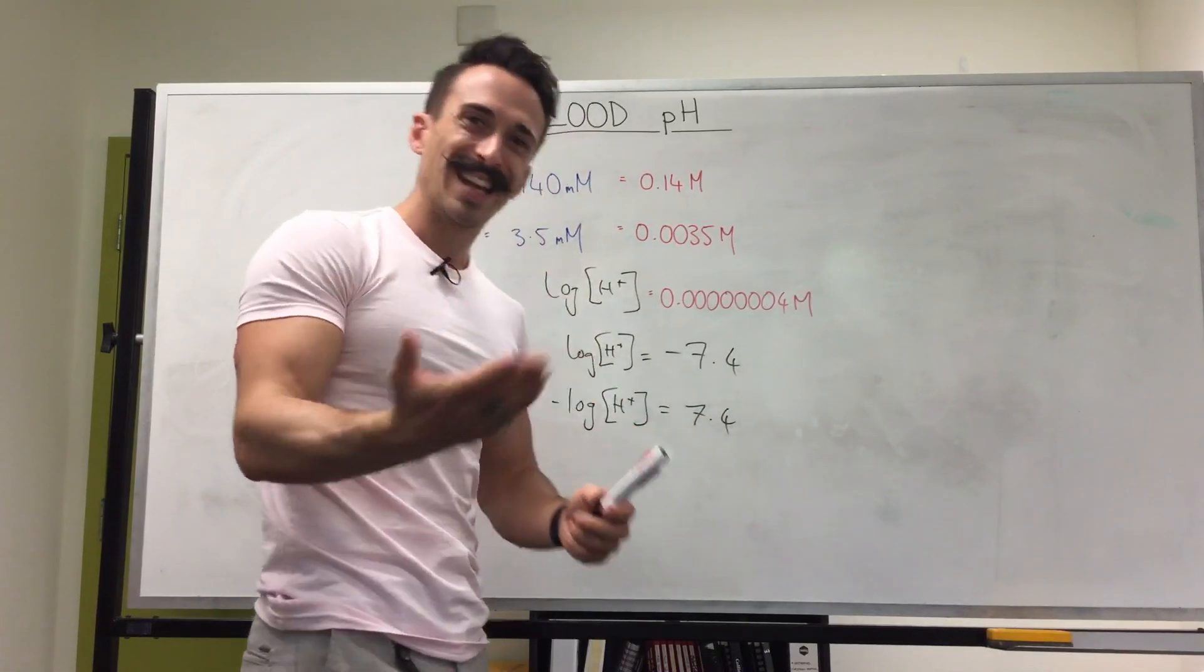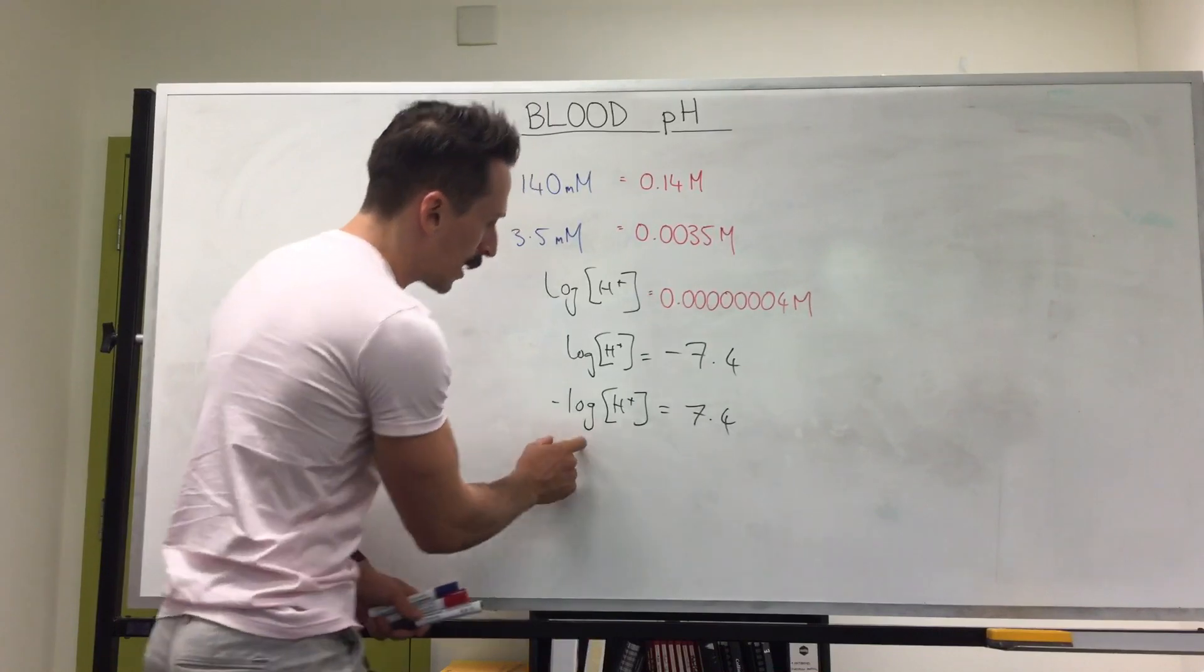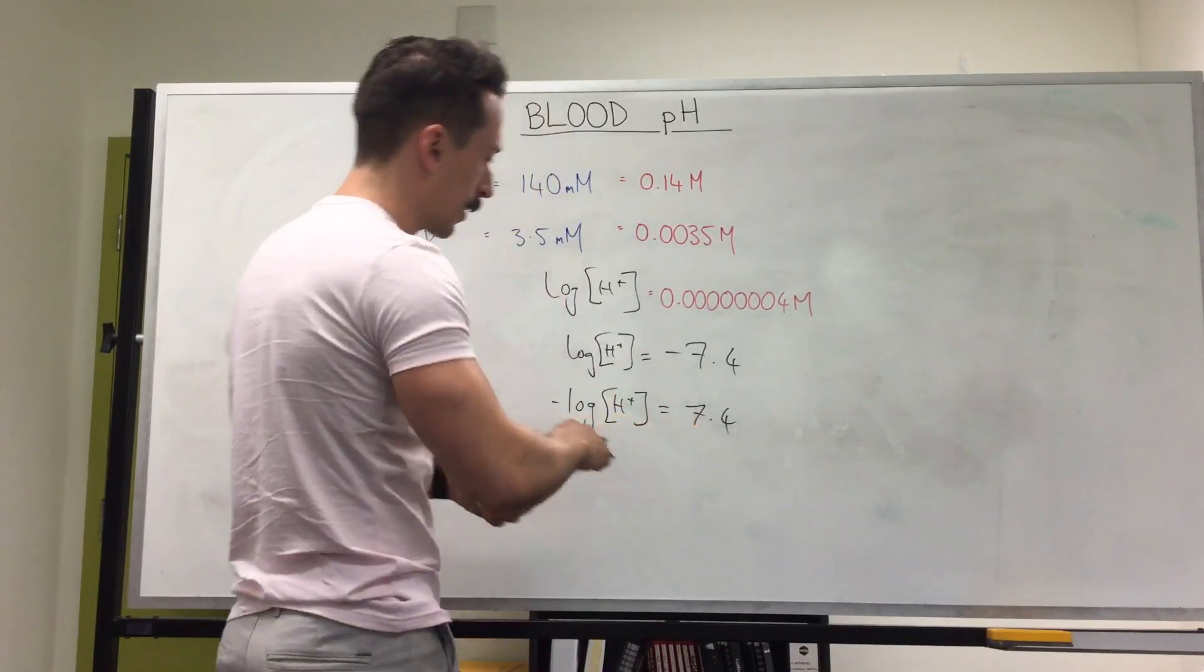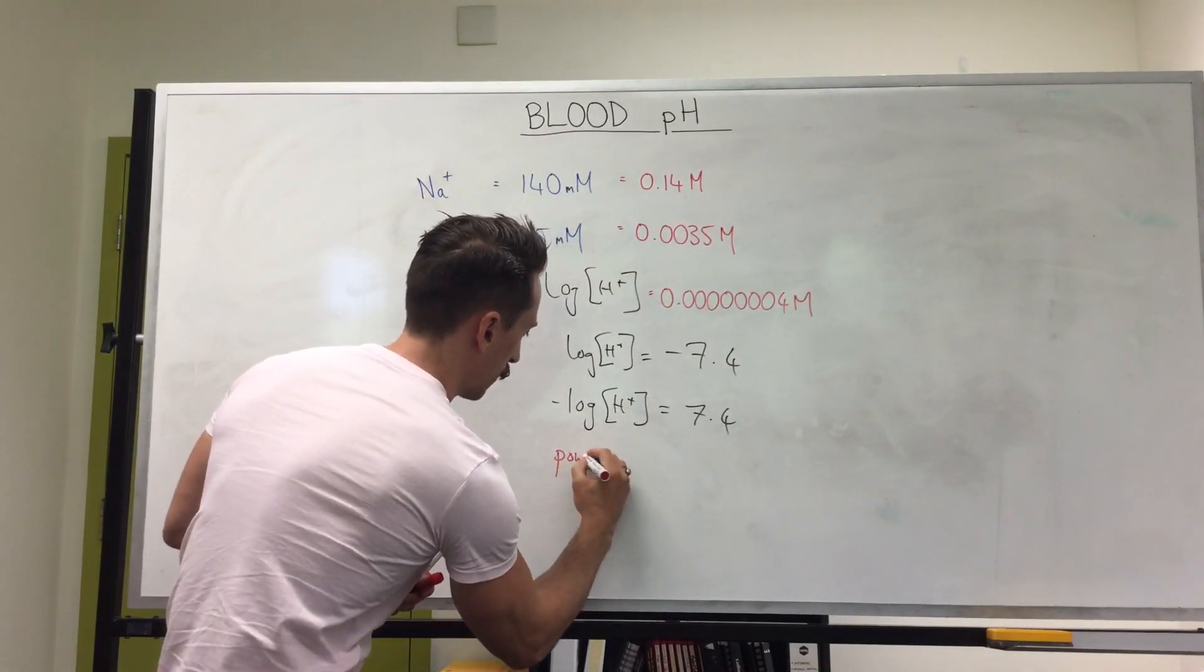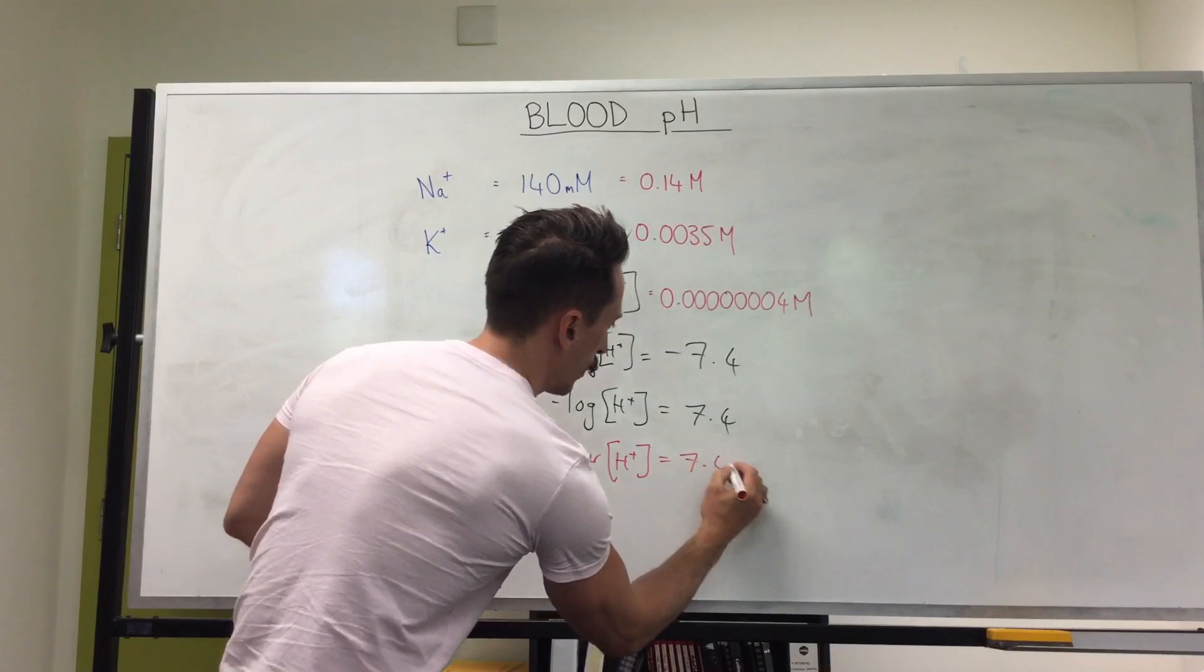But you don't want to write on a chart as the unit of measurement negative log hydrogen ion concentration. The negative log is the same as writing the power of, the power of something.